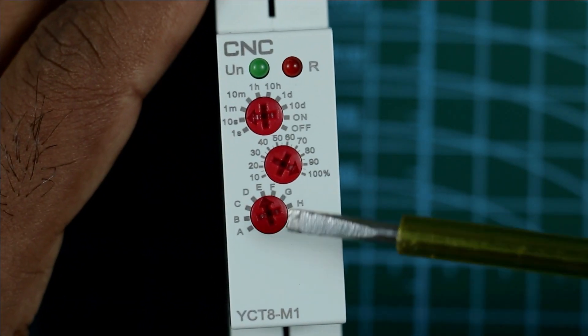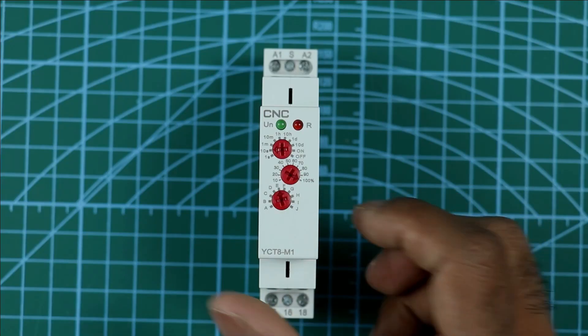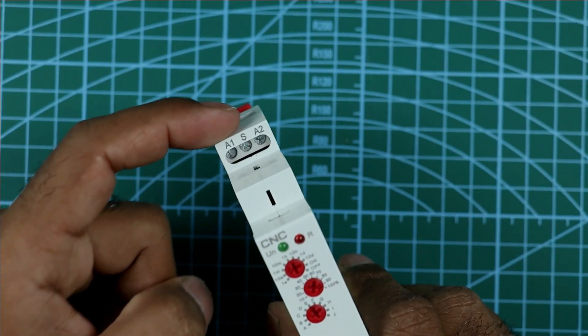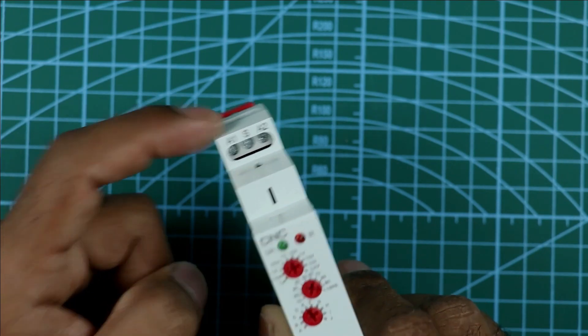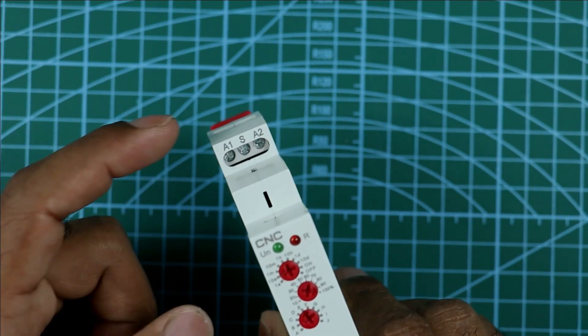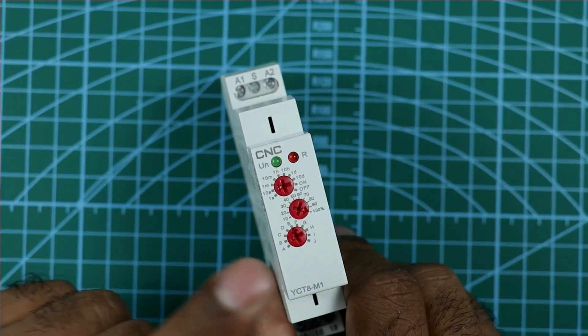It means when you provide pulse signal to this timer, countdown will be started. If you use a normal on-delay timer, then at A1 and A2 terminal of this timer, always power supply is required. But in this timer, only pulse signal is required to start the countdown. How this timer works, you will understand later.